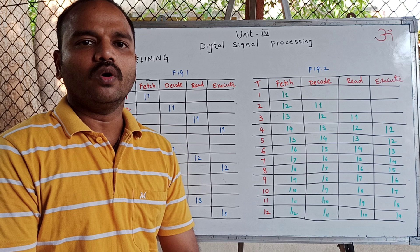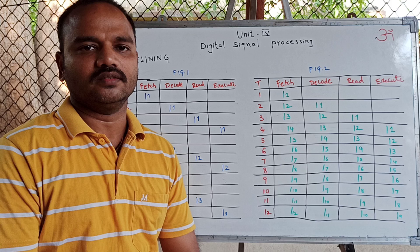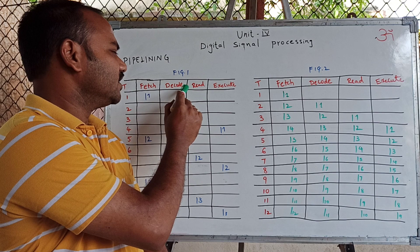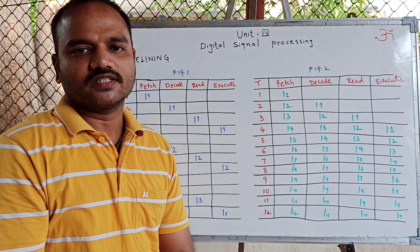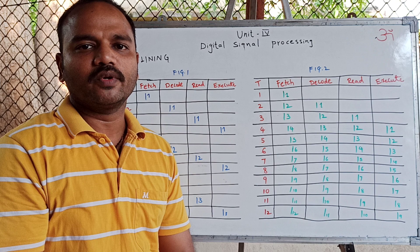In this lecture, I will explain you about pipelining. One of the approaches to increase the efficiency of a conventional microprocessor or digital signal processor is instruction cycle pipelining. An instruction cycle in general consists of four phases: instruction fetch phase, decode phase, read phase, and execute phase. These four phases are implemented as four independent units in hardware, and each unit will take an equal amount of time.